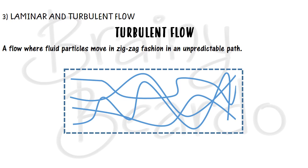The opposite is turbulent flow. A simple example is Bombay railway station — when a train comes, people rush in without discipline; they push one another, block each other, and there is a lot of chaos. Similarly, in turbulent flow the fluid particles flow in such a way that there is a lot of chaos and no well-defined path. Such a flow is called turbulent flow.